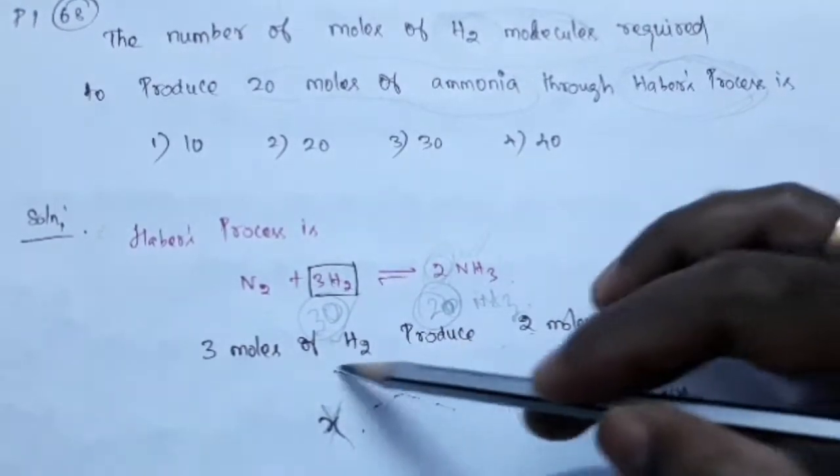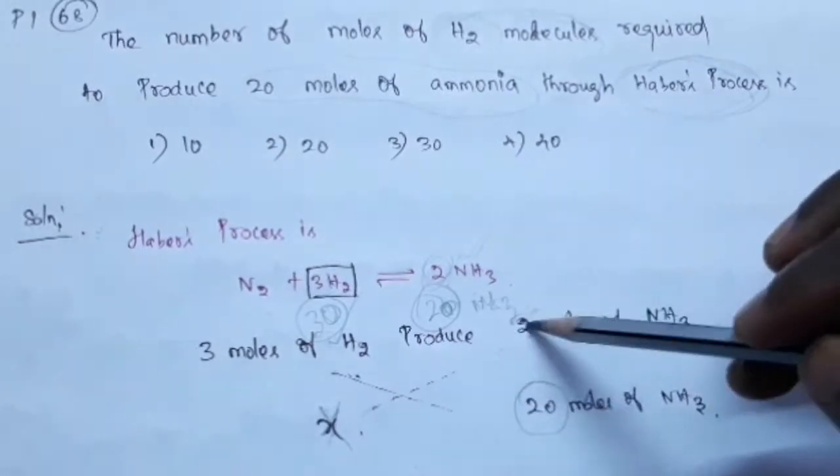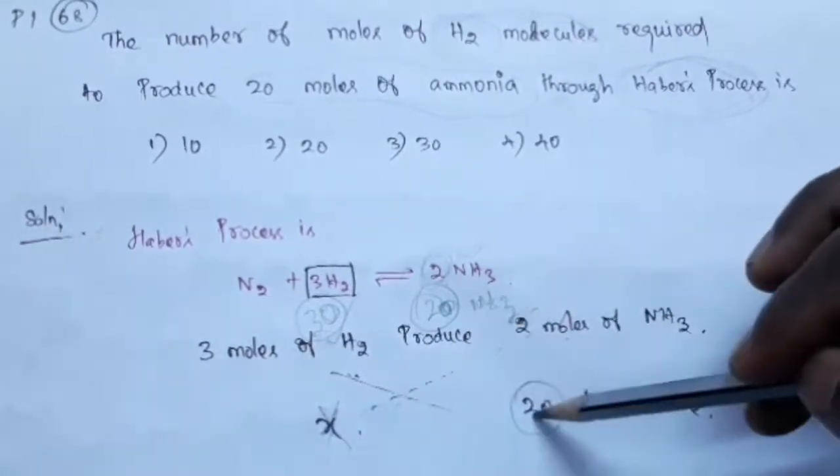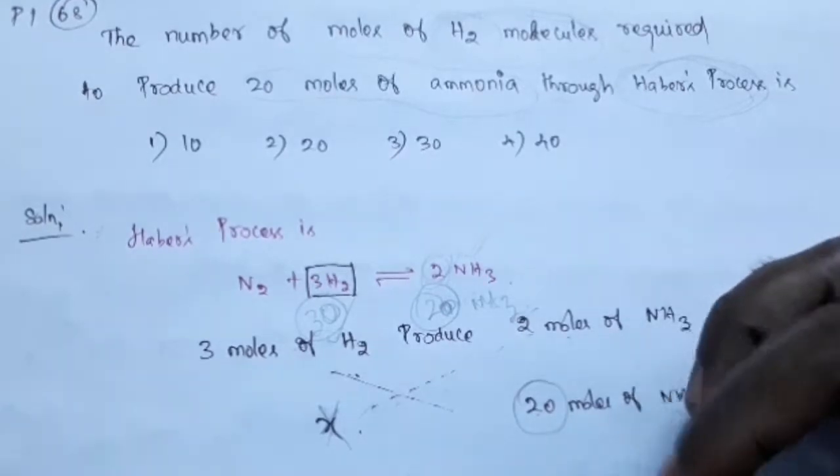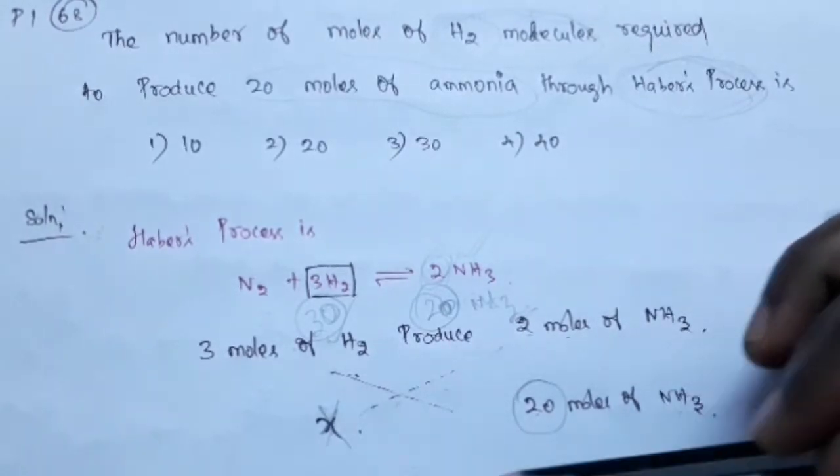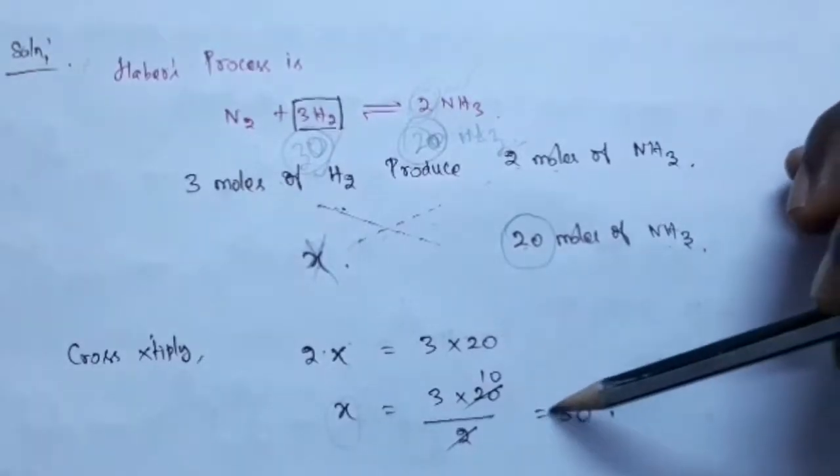Just cross multiply. X into 2, so 2X. 3 into 20. So find X. X is equal to 3 into 20 by 2, equal to 30.